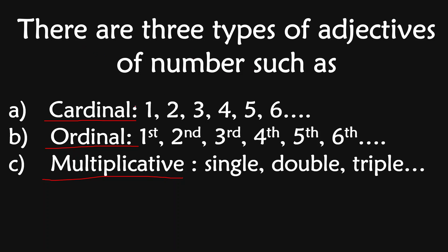There are three types of adjectives of number: cardinal, ordinal and multiplicative. In the ordinal form we use first, second, third, fourth, fifth, sixth — it is showing the place of the particular person, noun or subject. This is the ordinal adjective of number. What is the multiplicative? This is showing the entries — single, double, triple, fourth, fifth, sixth, seventh, like this. Six times, eight times — which is showing the entries, that is the multiplicative adjective of number.